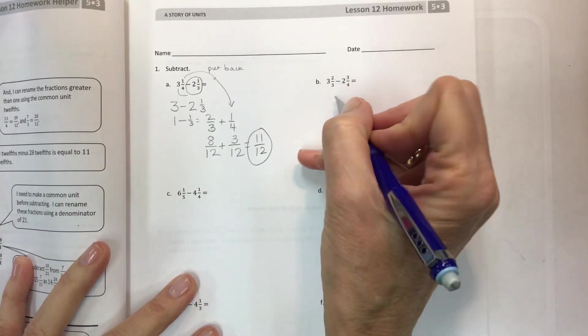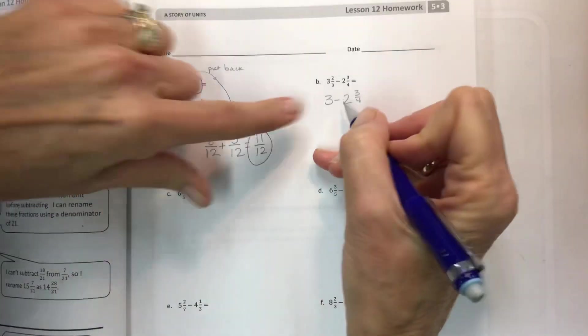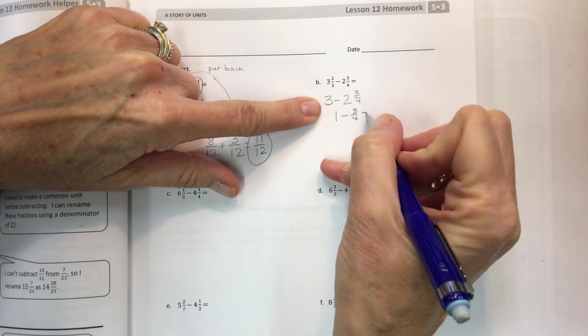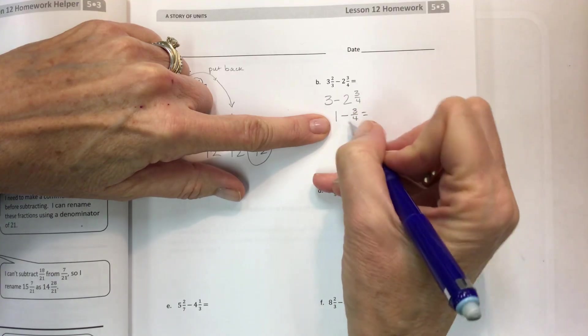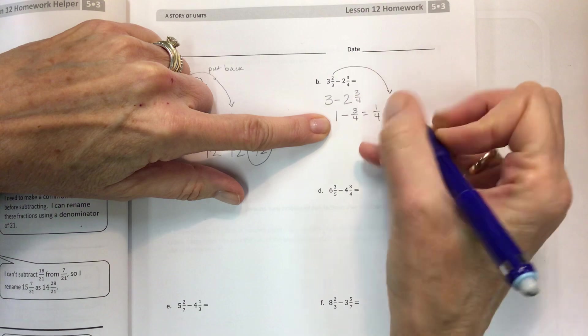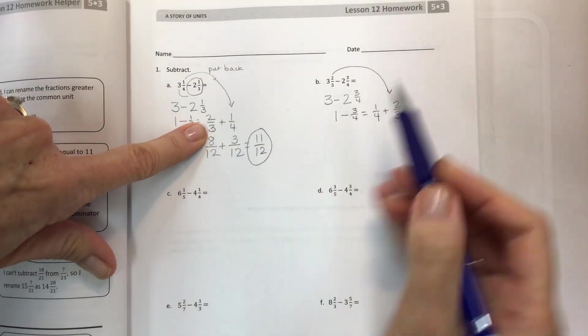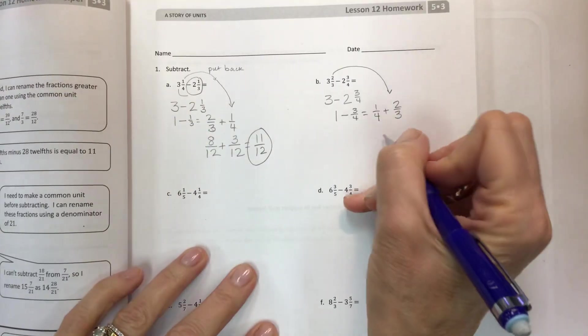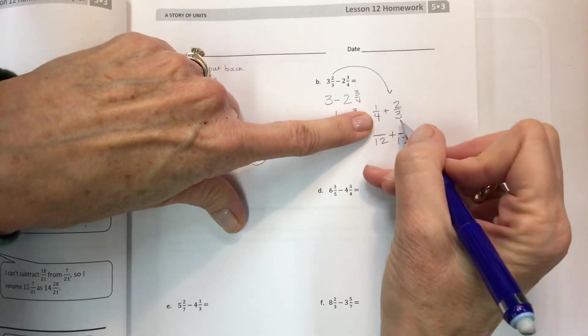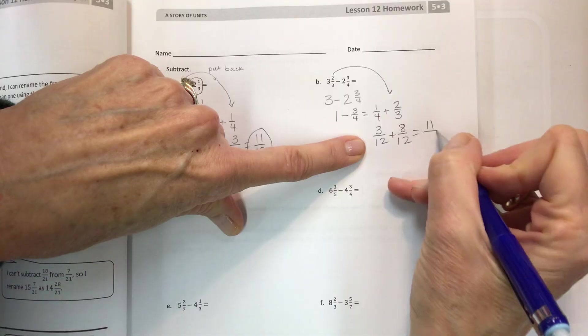So let's move on to b. Take three and subtract two and three-fourths. Now three minus two is one, but one minus three-fourths continues to get smaller. If it's in four parts and you take away three of them you have one left. Now put back the two-thirds. I don't know if you noticed but this is very similar. So we're gonna have twelfths for our denominator. Add them up and get eleven twelfths.